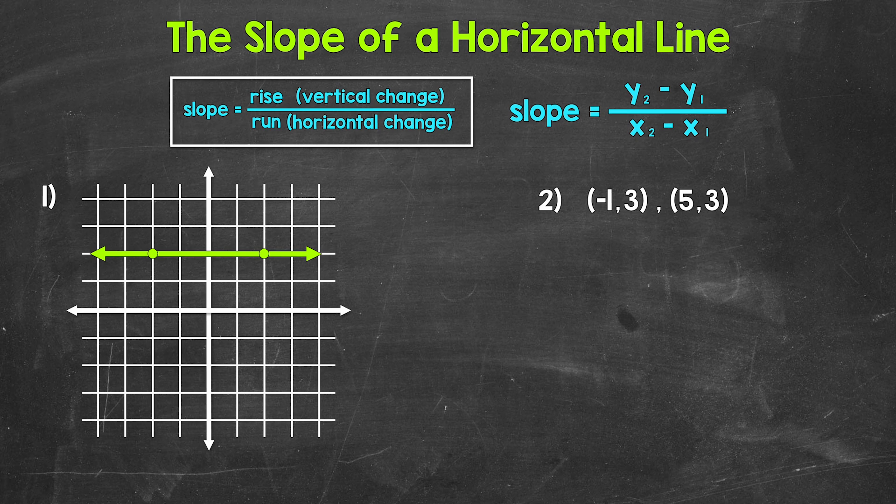Let's jump into number one, where we have a horizontal line graphed on the coordinate plane. Now remember, slope measures the steepness of a line, so how much a line moves up or down as it moves from left to right. Here we can see that this line isn't moving upward or downward at all, so what is the slope going to be?